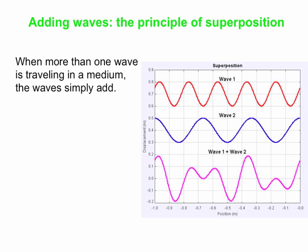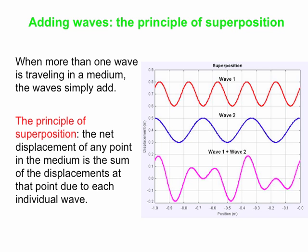Whereas here you've got a very big amplitude of wave 1 plus wave 2, because in both wave 1 and wave 2 you've got peaks there. The bottom line is that the net displacement of a point in the medium is the sum of the displacements at that point due to each individual wave. We've done it here for two waves, but you can combine as many waves as you want in a similar way. It's really all about superposition.